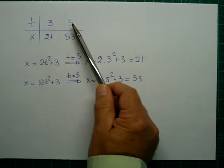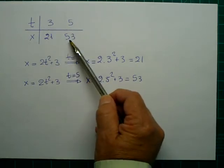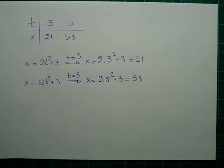Now let's find the displacement. The displacement is Δx, which is 53 minus 21, which gives 32 meters.